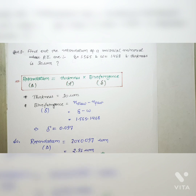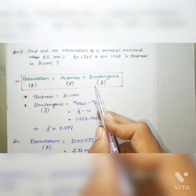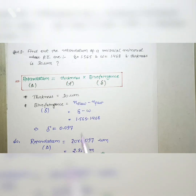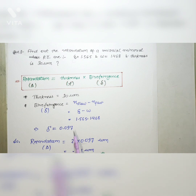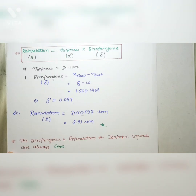To calculate retardation, substitute the values: thickness = 30 micrometers and birefringence = 0.097. Multiplying gives 2.91 micrometers. So the correct answer for this question is 2.91 micrometers. As a fact, the birefringence and retardation of isotropic crystals is always zero.